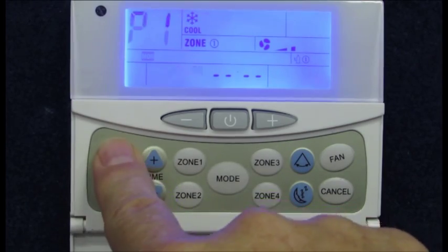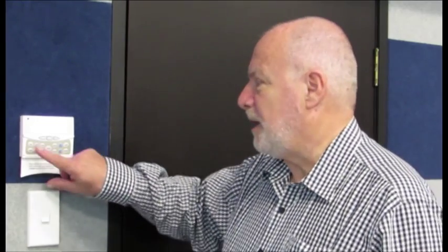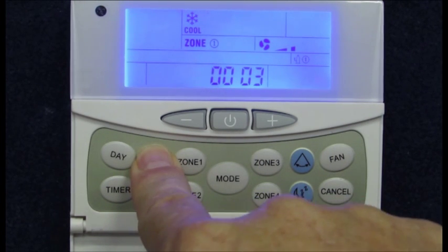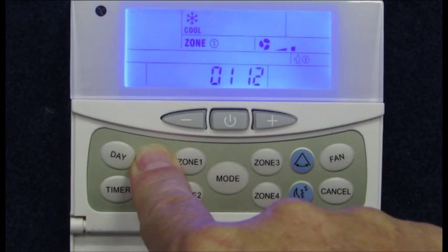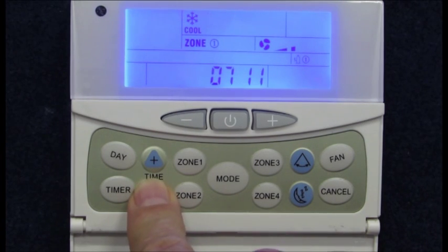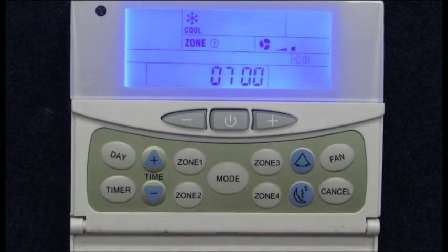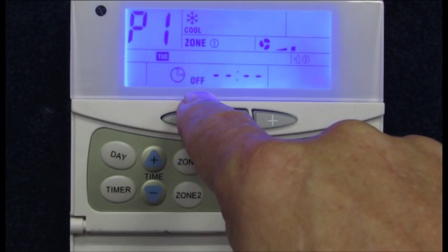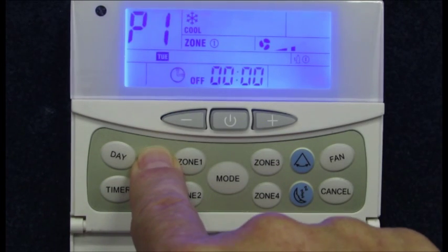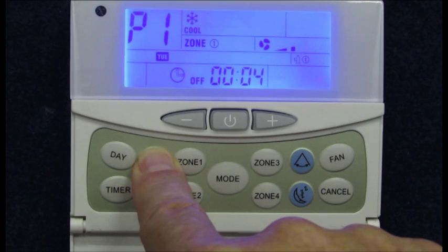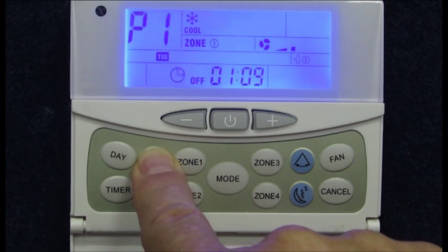To set the on time, use the time plus or minus buttons to increase or decrease the time in one-minute intervals. Hold either of these buttons down to change at a faster rate, but be prepared, as mentioned previously, after a few minutes it will jump to changing the hours instead of the minutes. Once the on time is set, use the timer button to select the off time, and as before, use the time plus or minus buttons to increase or decrease the time setting. Repeated pressing of the timer button will select between the on and off timer settings.